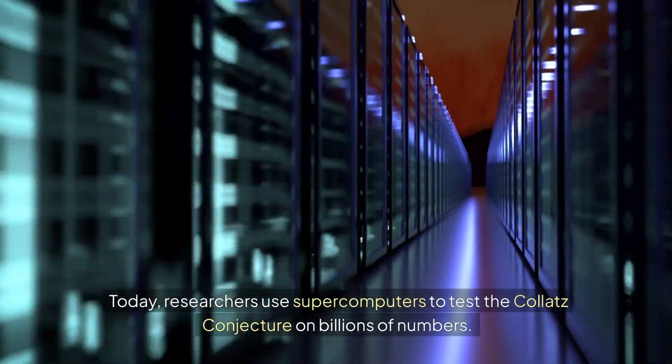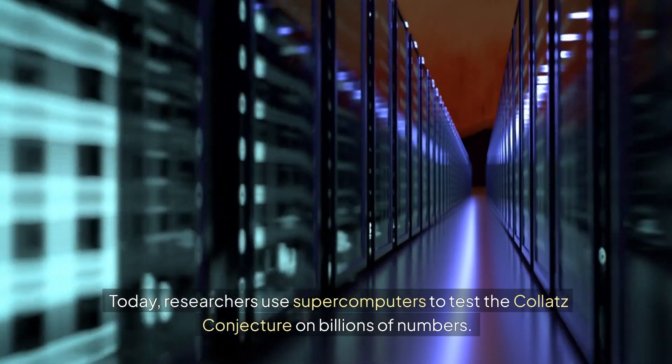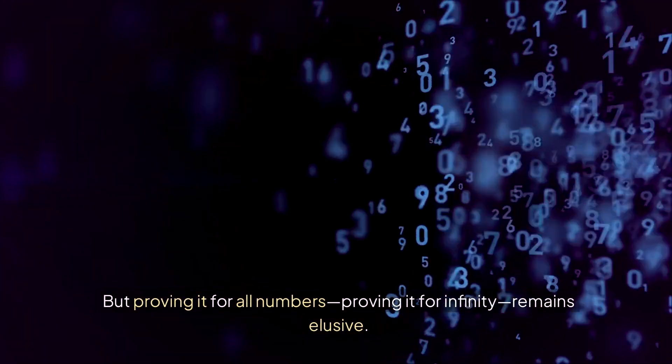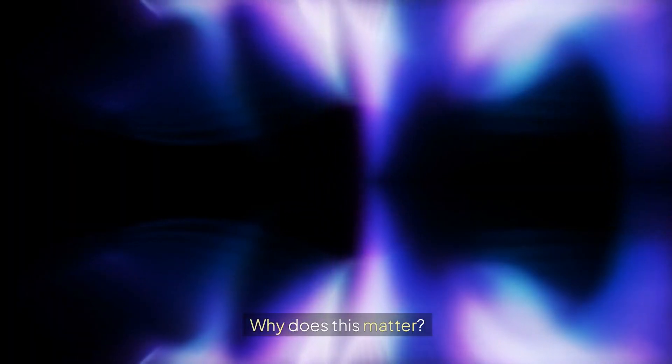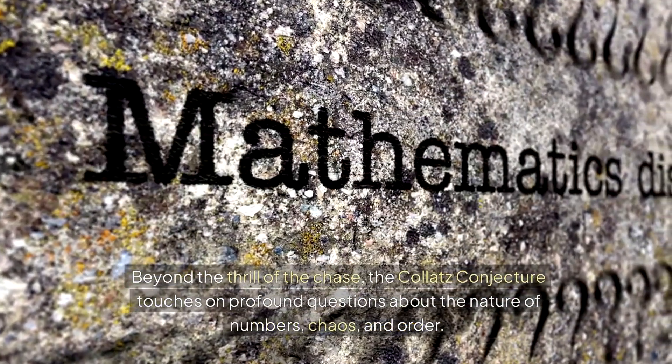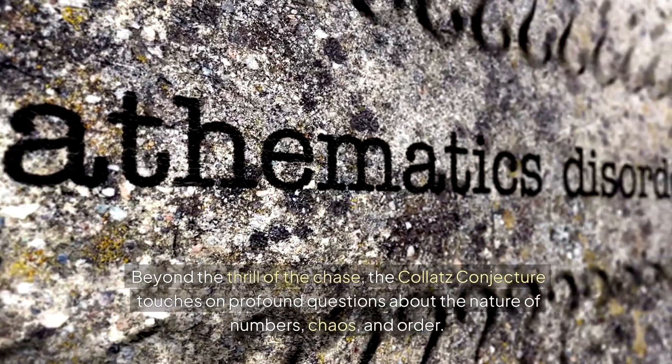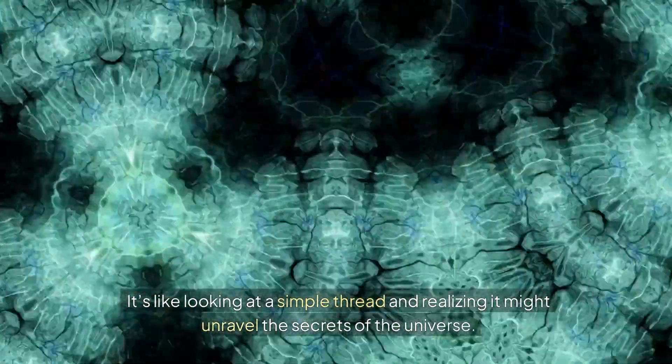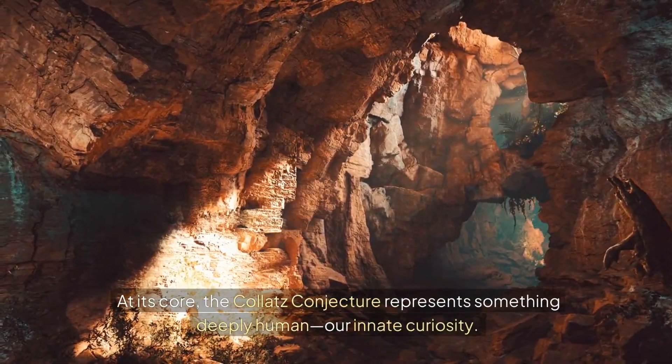Today researchers use supercomputers to test the Collatz Conjecture on billions of numbers. Every single one eventually reaches one. But proving it for all numbers—proving it for infinity—remains elusive. Why does this matter? Beyond the thrill of the chase, the Collatz Conjecture touches on profound questions about the nature of numbers, chaos, and order. It's like looking at a simple thread and realizing it might unravel the secrets of the universe.